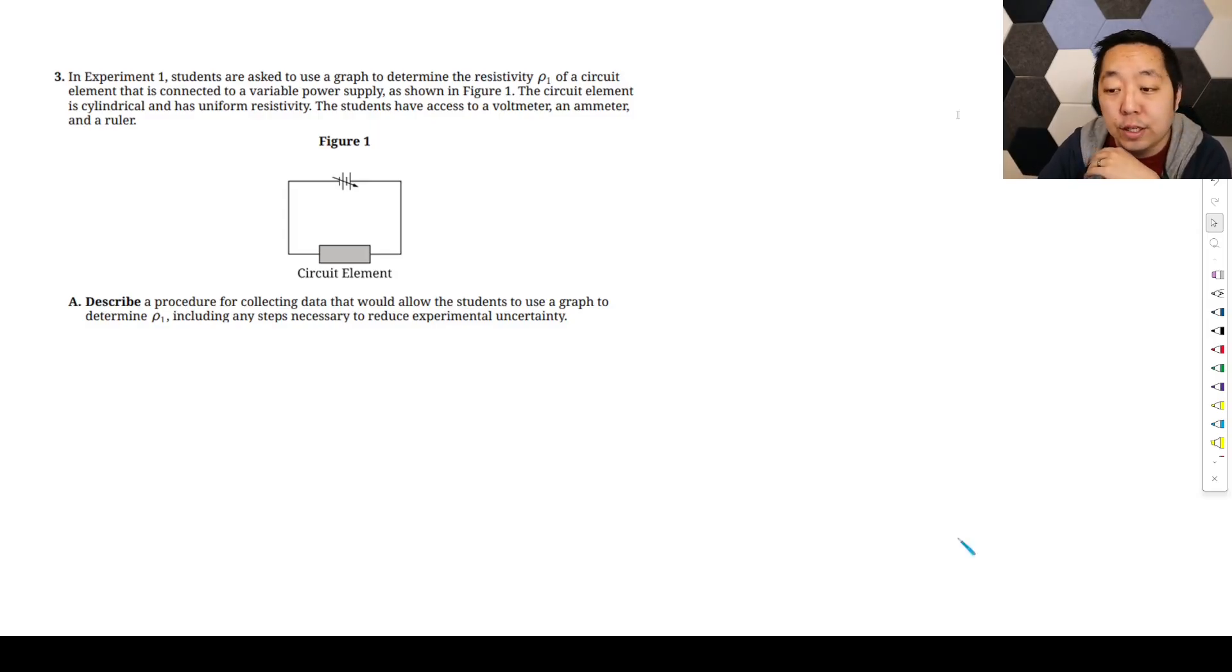Alright, let's take a look at the third FRQ for AP Physics C E&M 2025. Experiment one, students are asked to use a graph to determine the resistivity ρ₁ of a circuit element that's connected to a variable power supply as shown.